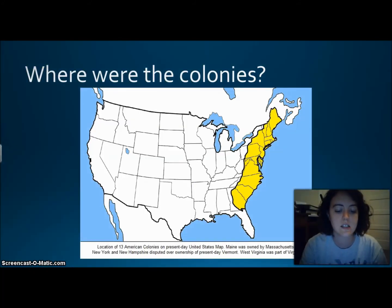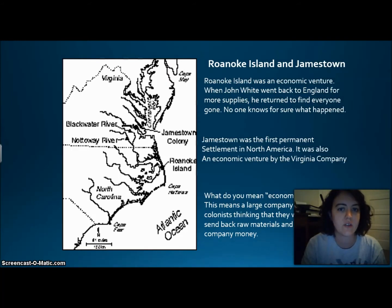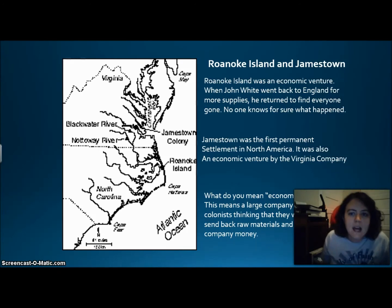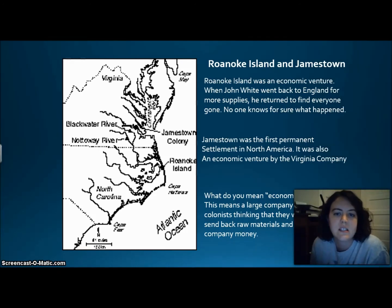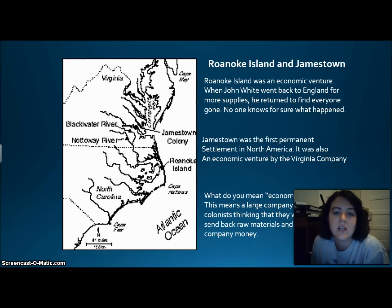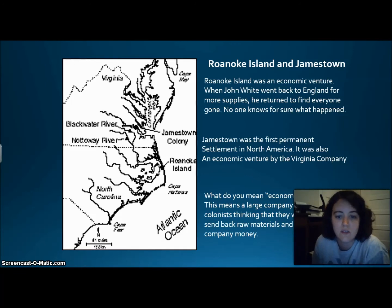Now we're going to look at our colonies, located along the eastern shore near the Atlantic Ocean. Roanoke Island was an economic venture — when John White went back to England for more supplies, he returned to find everyone gone. It's called the Lost Colony of Roanoke Island. Jamestown was the first permanent settlement in North America, also an economic venture by the Virginia Company — a large company that sponsored colonists to live there, expecting them to send back raw materials and generate profit.